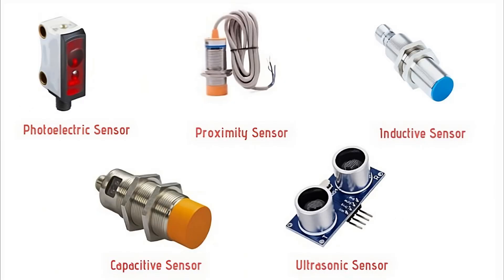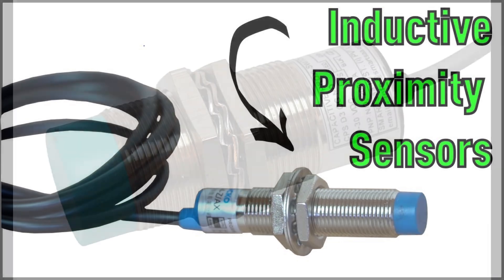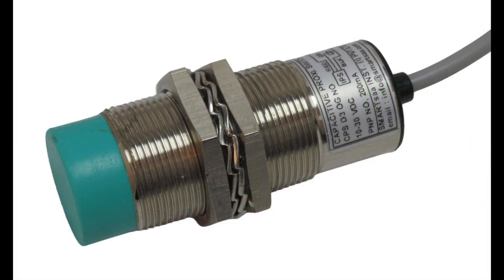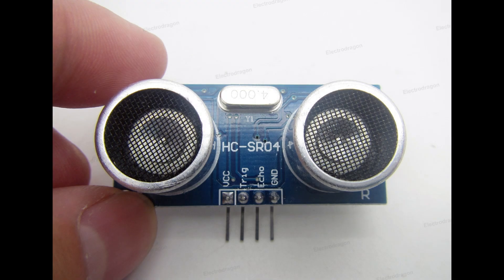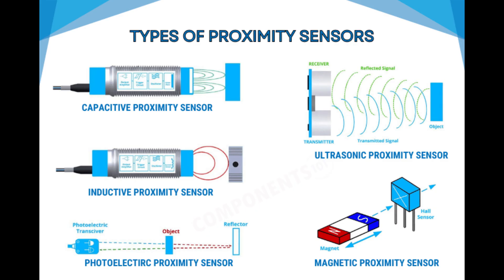There are several types of proximity switches, each suited for different applications: inductive, which detects metallic objects; capacitive, which senses both metallic and non-metallic materials; ultrasonic, which uses sound waves to detect objects; and photoelectric, which uses light to detect objects.